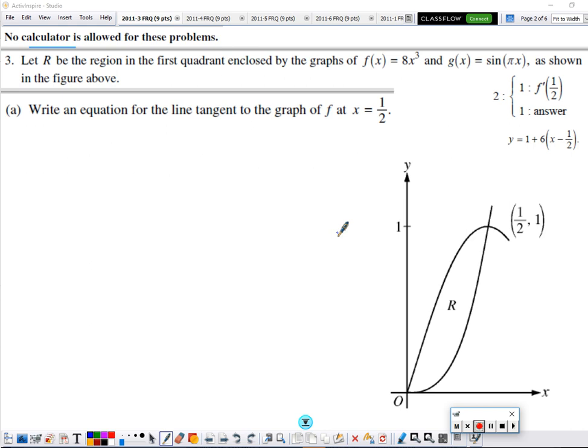Okay, no calculator. Let R be the region in the first quadrant enclosed by the graphs of f and g, as shown. So not a lot of information, so start right in on the question.